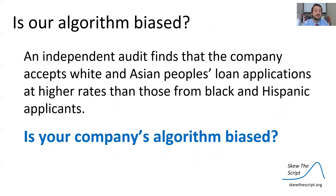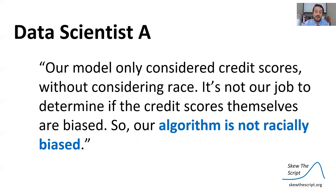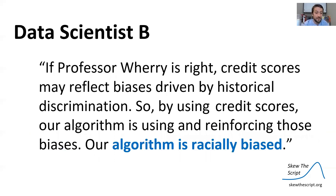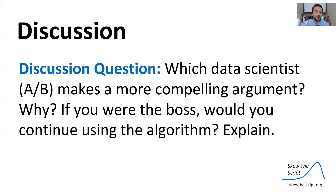So returning to the question: is our algorithm biased? An independent audit finds the company accepts white and Asian people's loan applications at higher rates than those from black and Hispanic applicants. Data Scientist A argues their model only considers credit scores without considering race — it's not their job to determine if the credit scores themselves are biased, so the algorithm is not racially biased. However, Data Scientist B takes the stance that if Professor Wary is right, credit scores may reflect biases driven by historical discrimination, so by using credit scores, the algorithm is using and reinforcing these biases — making it racially biased. The discussion question: which data scientist makes a more compelling argument and why?